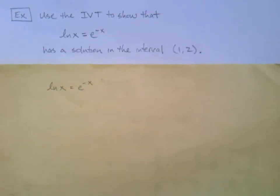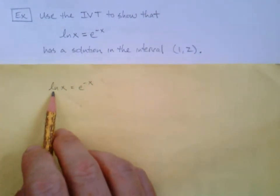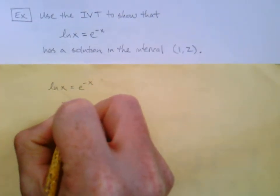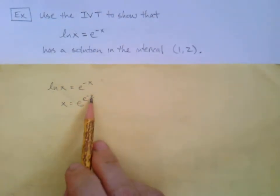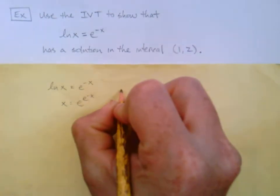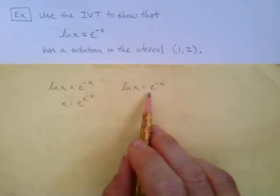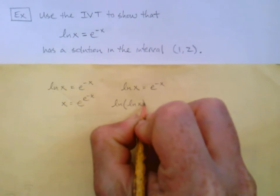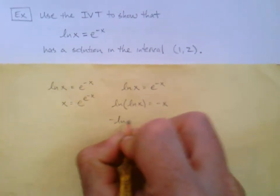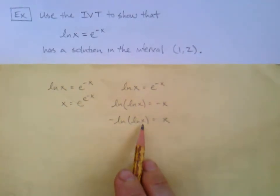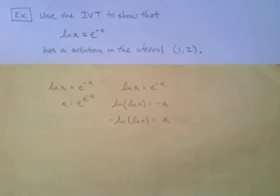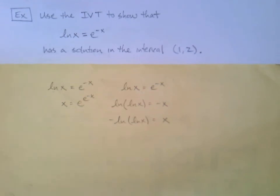If we try to solve ln(x) = e^(−x) traditionally, we need to isolate x, but there's an x on both sides. You might try putting both sides as a power of e — that cancels the natural log, but gives e^(e^(−x)), which still has x. Or take the natural log of both sides to cancel the e — that gives ln(ln(x)) = −x, which is also not solved. There's no way to manipulate this algebraically to isolate x, so IVT is at least a big step in the right direction.